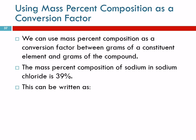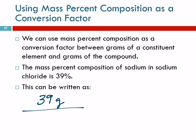We can use mass percent as a conversion factor. It doesn't really look like a conversion factor, but it's actually very convenient — we can go between grams of a constituent element and grams of a compound. That's what we were just doing using mole ratios, but if we have the percent we can use that instead. So they're telling us that the mass percent composition of sodium in sodium chloride is 39%. Percent literally means per hundred — this is 39 parts per hundred parts.